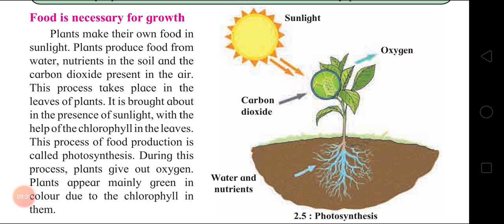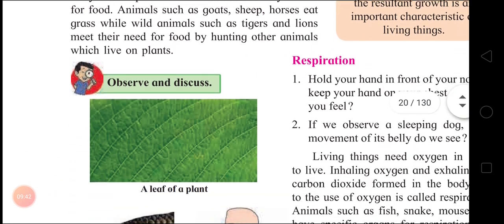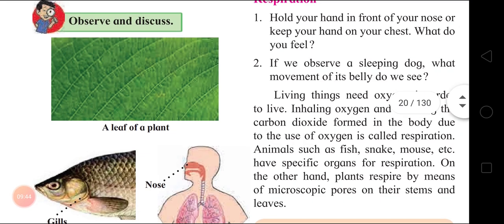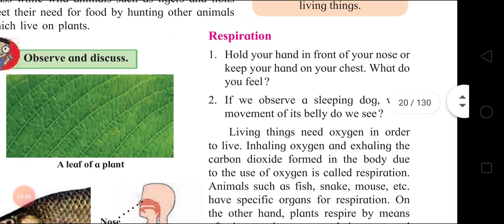Next feature characteristic is Respiration. Activity: hold your hand in front of your nose or keep your hand on your chest. What do you feel? If you hold your hand in front of your nose, you will feel air coming from the nose. And when you keep your hand on your chest you will feel the heartbeats.